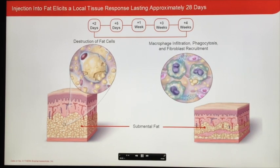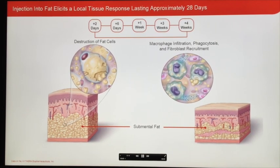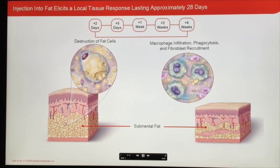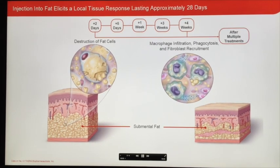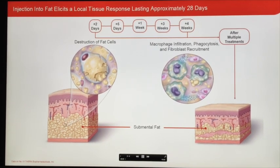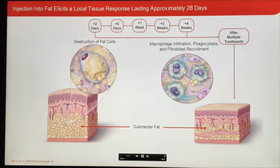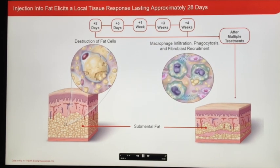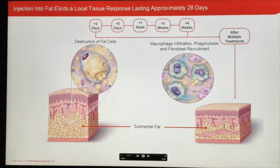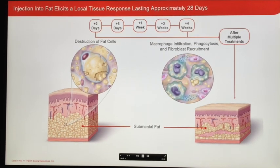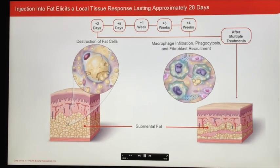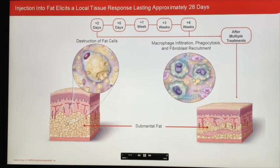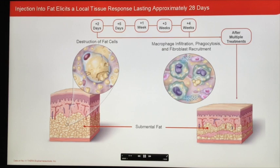Injection of Kybella into fat causes a local tissue response, characterized by the infiltration of macrophages and the recruitment of fibroblasts. After treatment, the fat that is cleared from the treatment area is processed through natural metabolic processes to be used for energy or stored naturally. If the fat is stored, it is unlikely to result in a measurable redistribution to other areas of the body, given the relatively small amount of fat eliminated from the area under the chin.